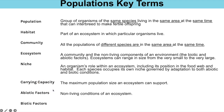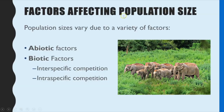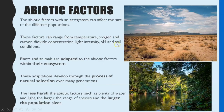Abiotic factors are the non-living conditions of an ecosystem that affect the survival of individuals, and biotic factors are the impacts of the interactions between organisms. The size of a population varies depending mainly on these two factors — the abiotic factors organisms are exposed to and the biotic factors — and in particular we're going to be looking at competition.